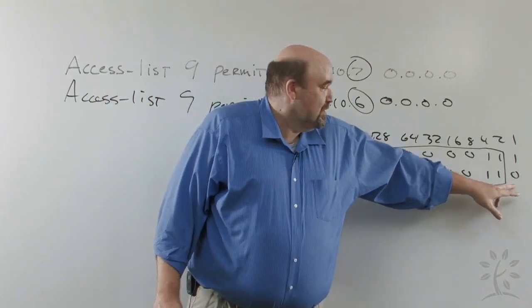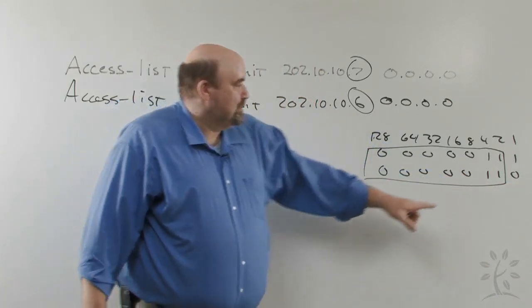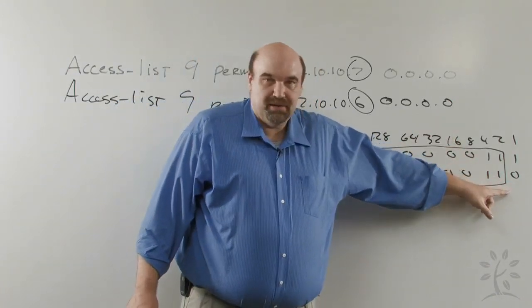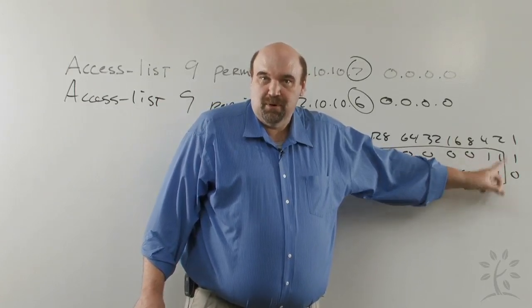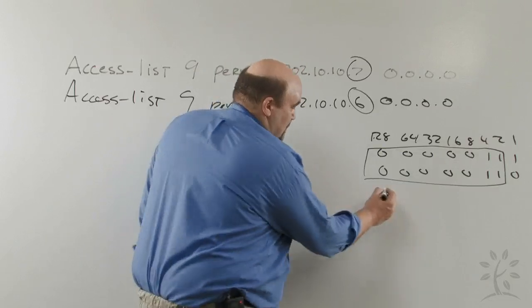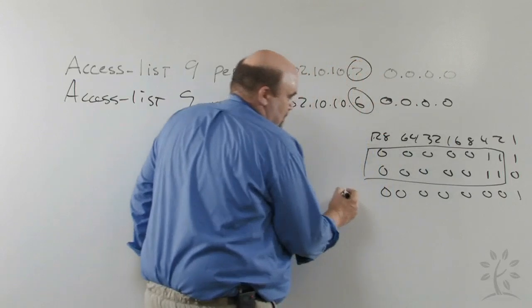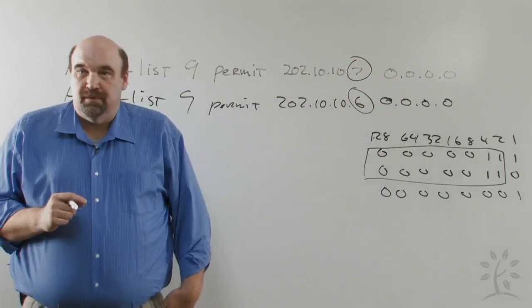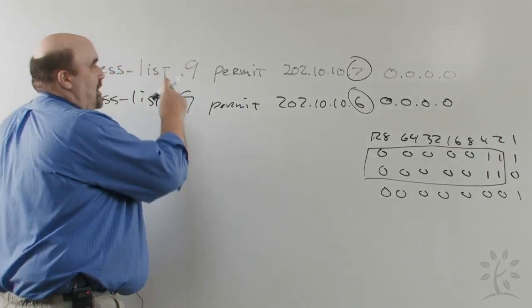The bits that are different are the 1 bit. So what we're going to do is simply introduce a 1 into the Wild Card Mask here to exclude both of those conditions. So our Wild Card Mask now, instead of being all zeros, looks like this. So let me rewrite the line for you up above.